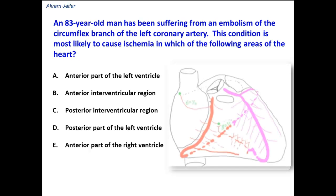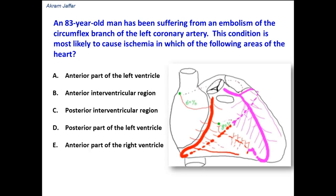Let's look at the diagram. This is the left coronary artery, which divides into a circumflex branch and into the anterior interventricular, or left anterior descending artery.